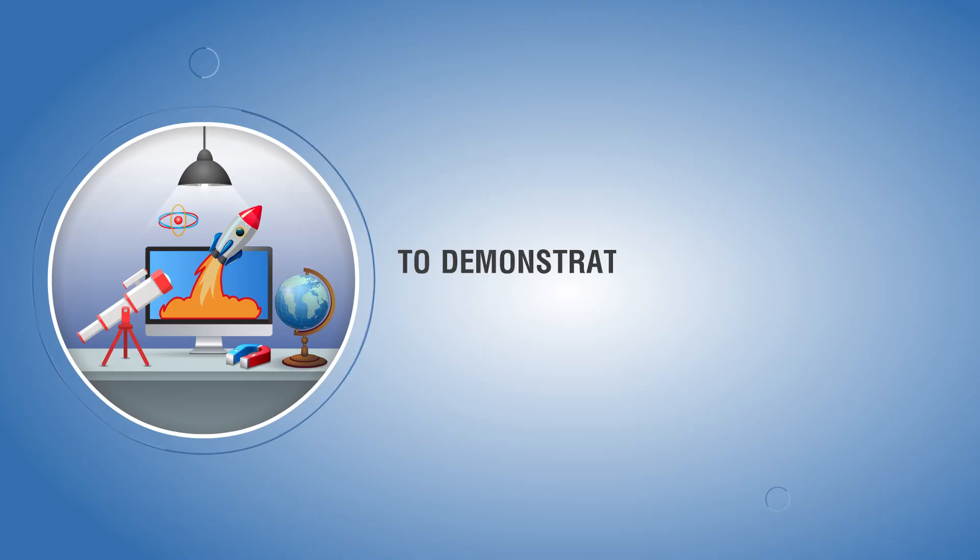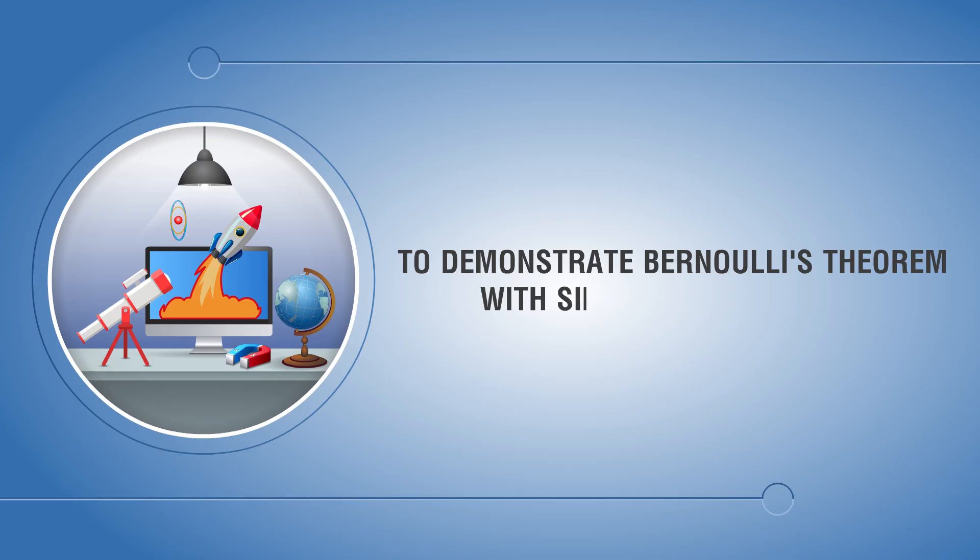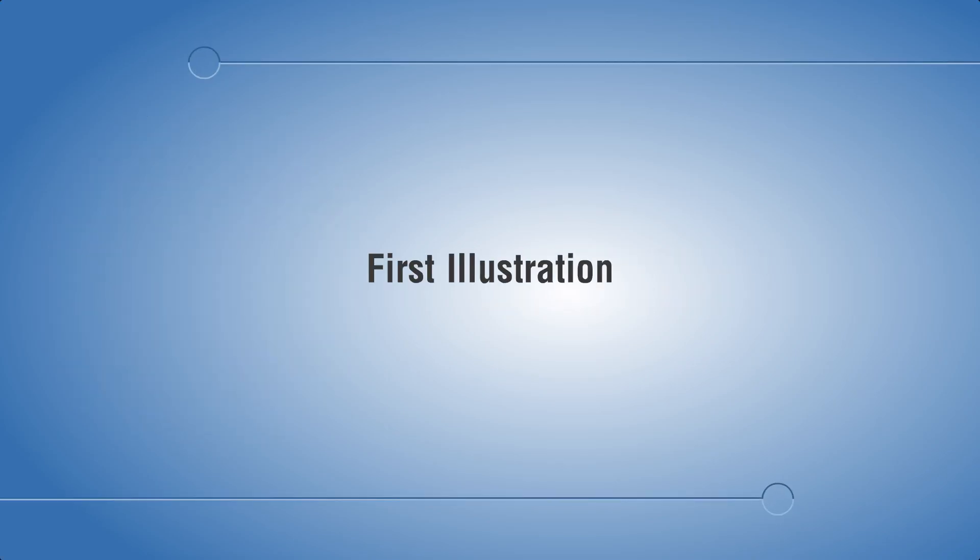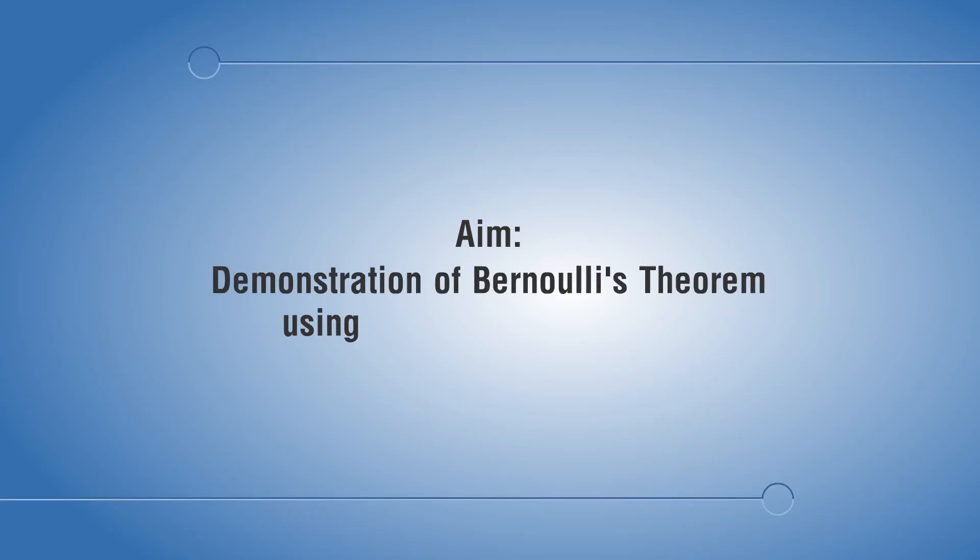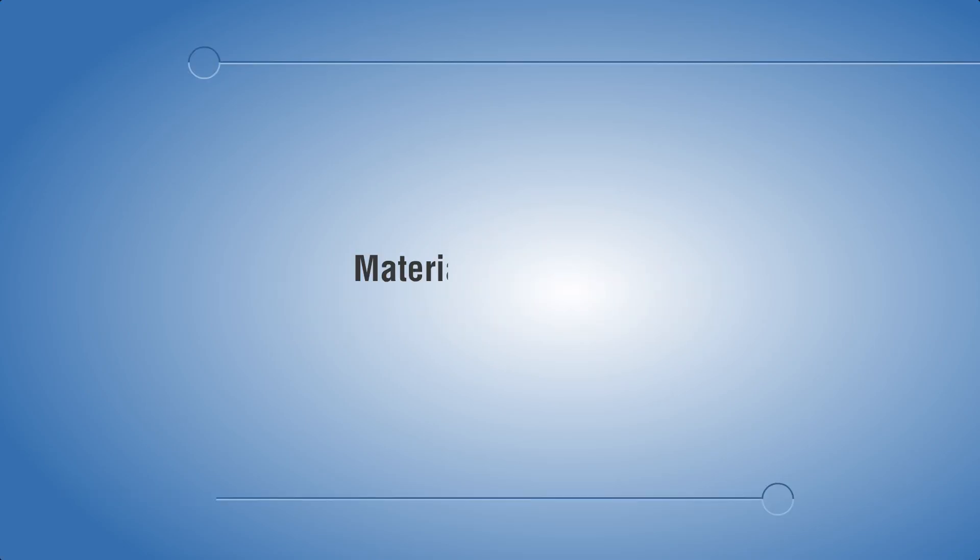To demonstrate Bernoulli's theorem with simple illustrations. First illustration: aim demonstration of Bernoulli's theorem using two simple pendulums. Materials required: horizontal rod, two simple pendulums. Bob can be paper ball or tennis ball.